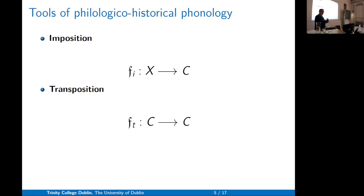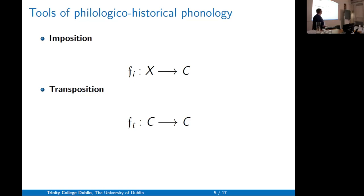Imposition means we're somehow imposing a phonetic interpretation on the Chinese characters from outside the system. And then we have transposition, where we have an existing interpretation of some part of Chinese and are moving that interpretation to some other part of Chinese — getting some interpretation on part of the data and then moving it around inside the object we're studying.